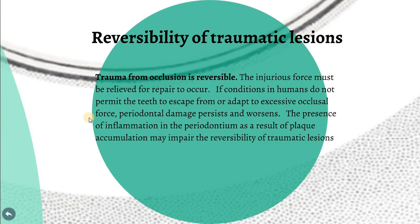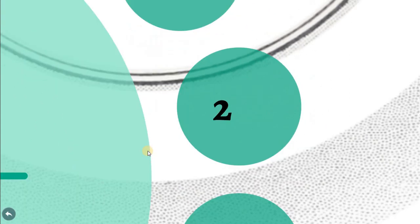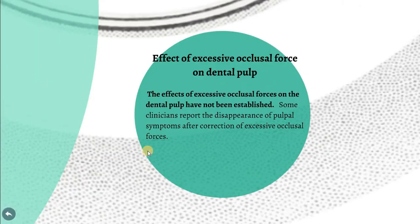A significant point is the reversibility of the traumatic lesion. Trauma from occlusion is reversible. After removing the injurious force, symptoms should subside, the condition will repair, and it will return to normal — but this is only when there is no persistent inflammation. The presence of inflammation in the periodontium as a result of plaque accumulation may impair the reversibility of the traumatic lesion because of continuous destruction in the periodontium.